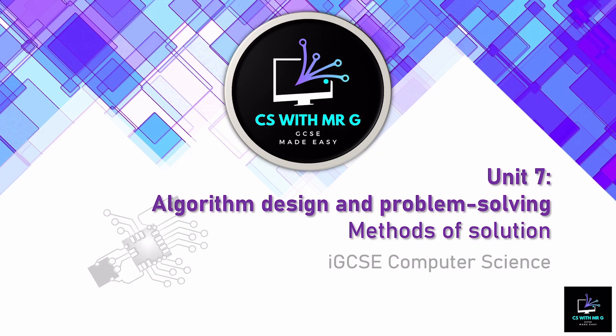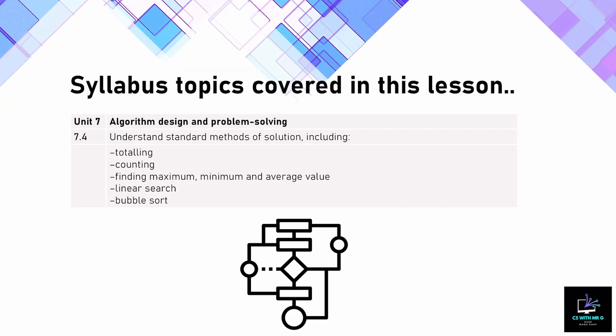Welcome back to another lesson within Unit 7 of the IGCSE Computer Science Syllabus. We are still looking at algorithm design and problem solving, in particular pseudocode. The pseudocode we will look at today is what we call Methods of Solution, which is all about the standard methods that can be used within pseudocode, including totalling.